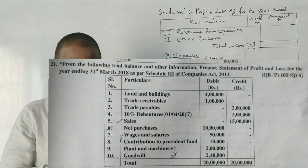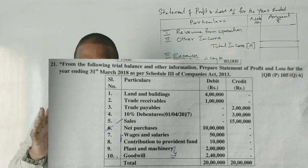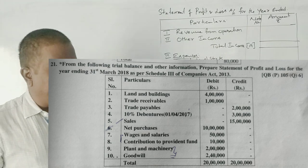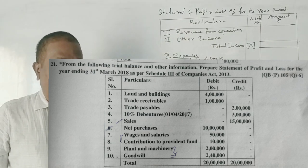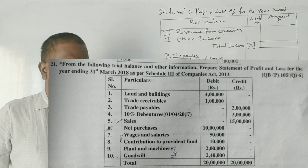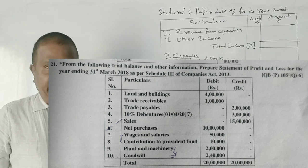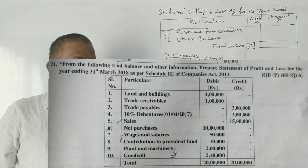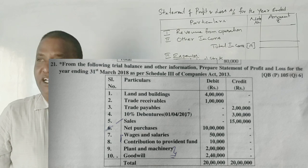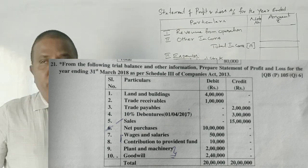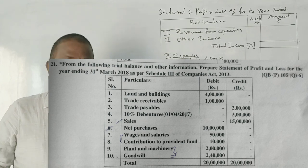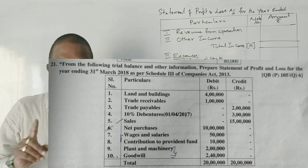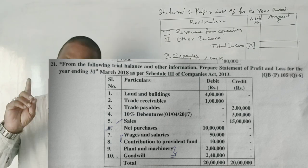I have a question from the following trial balance and other information: Prepare Statement of Profit and Loss Account for the year ending 31st March 2018. As per Schedule 3 of the Companies Act 2013, Schedule 3 will be the Statement of Profit and Loss Account.